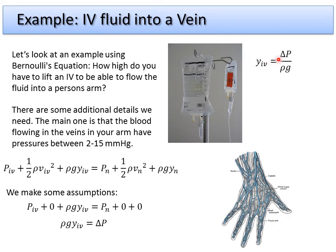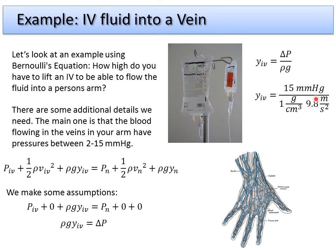Solving for the IV height, it's the change in pressure — that 15 millimeters of mercury — divided by the density of the fluid times g. We use 15 millimeters of mercury, a density of 1 gram per centimeter cubed (approximately the density of water, which is close to IV fluid), and g = 9.8 meters per second squared. After the unit conversions, plugging these numbers in gives us that the top of the IV has to be greater than 20.5 centimeters above the needle — about a foot or so higher than where the needle is inserted.